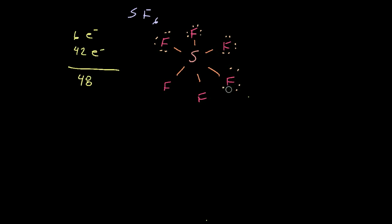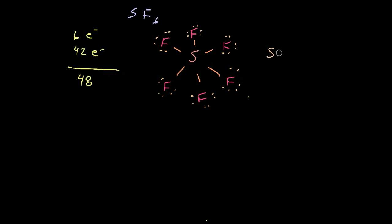Sometimes I won't even count up all the electrons — I'll just go around and add an octet to all the fluorines and then count how many electrons I've used. If I've used too many, I'll erase them and go from there. You can say: eight electrons times six fluorines is 48, so I must have done it right. And this is another circumstance where sulfur ends up with twelve valence electrons.